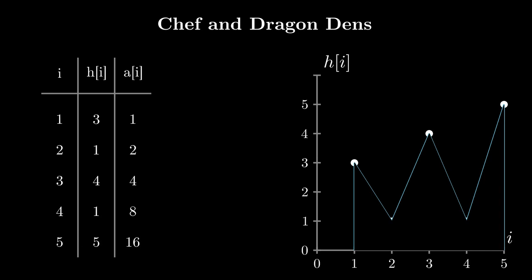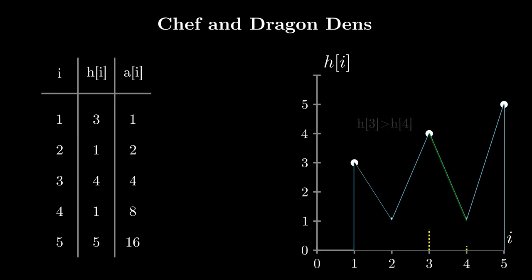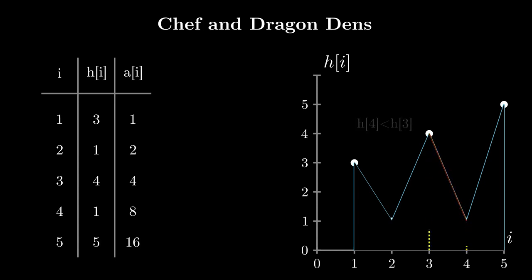Now let's define something called a move. We can move from point i to point j if h[i] is greater than h[j]. So if i equals 3 and j equals 4, we can move from 3 to 4 as h[3] is greater than h[4]. However, we cannot move from 4 to 3 as h[4] is less than h[3]. A move is also invalid if the line segment joining the two points i and j passes through the solid portion of our graph.